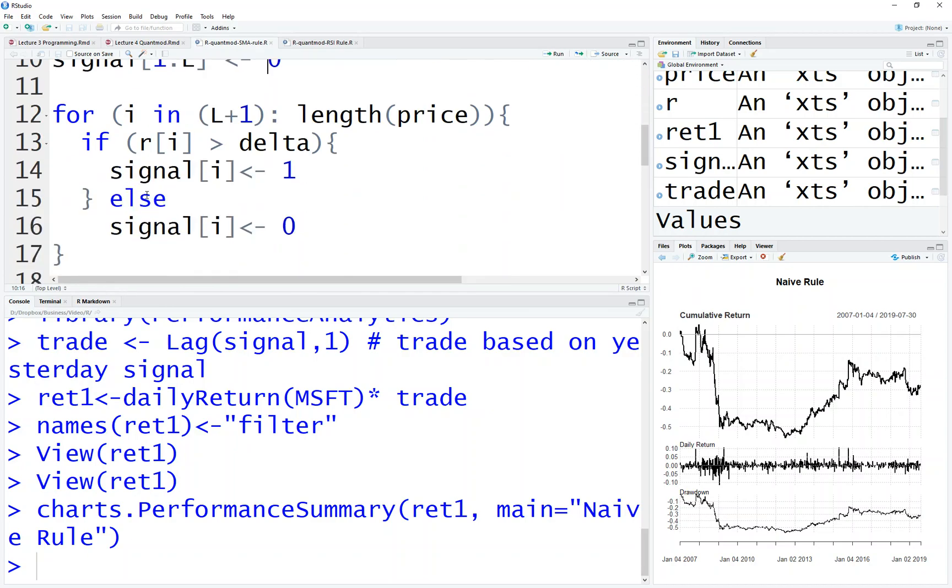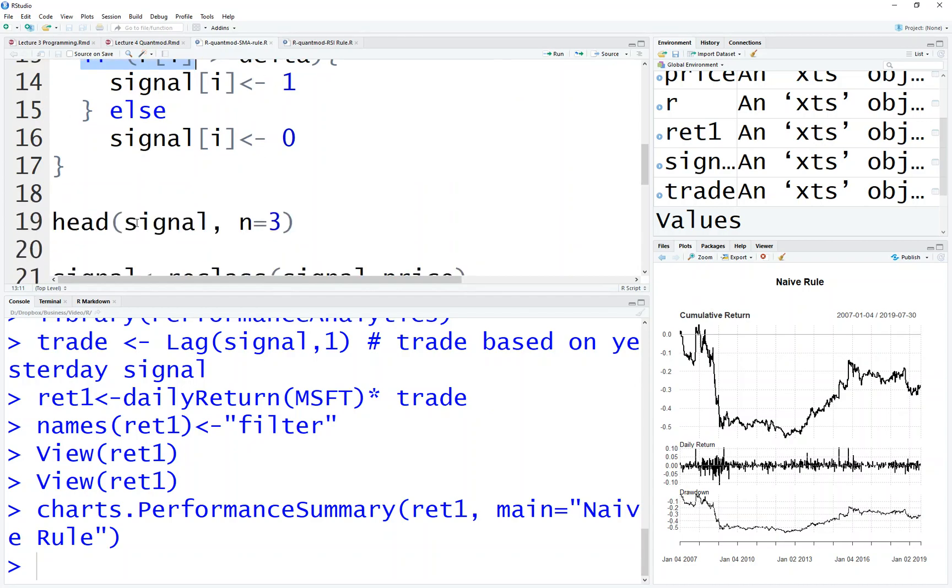So basically, the only change here is from L plus 1 day until the end: if R is bigger than delta, you have a buy signal; otherwise, 0. So this is the same as the filter rule.